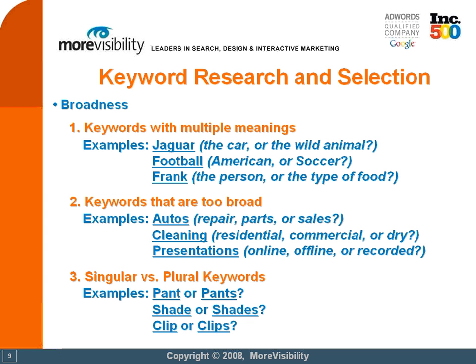Finally, consider the singularity or plurality of your keywords. For example, the word pant has a completely different meaning than the word pants. The word pant means to breathe hard and quickly, while the word pants refers to the article of clothing that we all wear. The same holds true for shade and shades, and clip and clips.